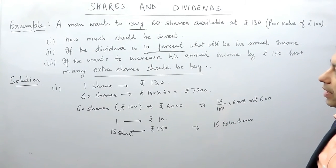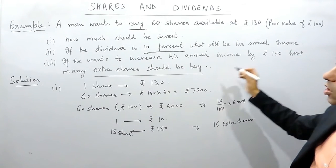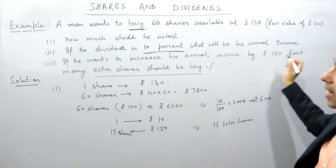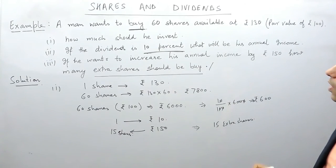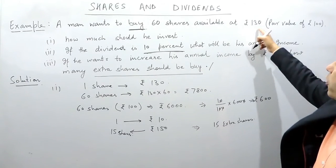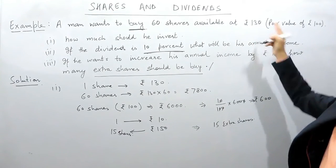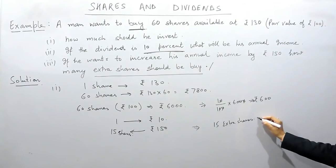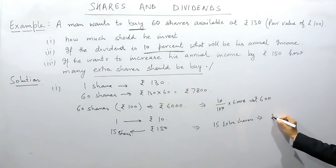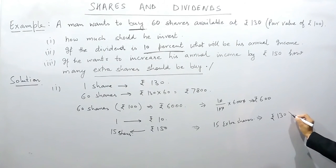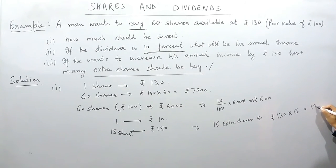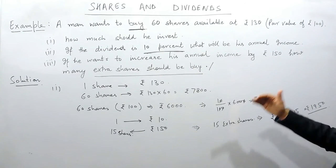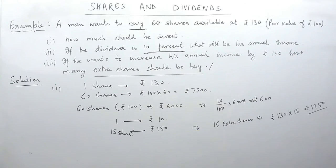They may ask you how much extra investment is needed. We know that he is buying a share for rupees 130, so if he wants to buy 15 extra shares at the value of rupees 130, the extra investment he should do is rupees 130 multiply by 15, that is 1950. If he is investing rupees 1950 extra, he will get the extra annual income of rupees 150.